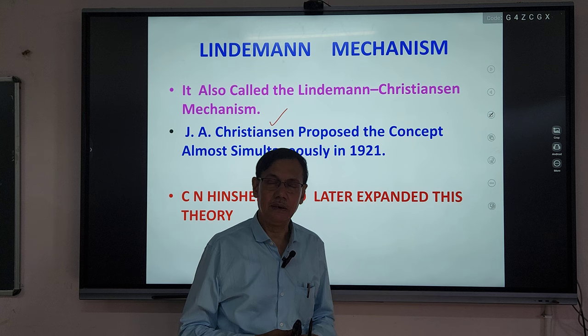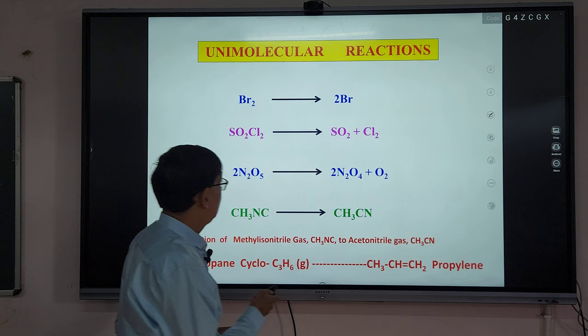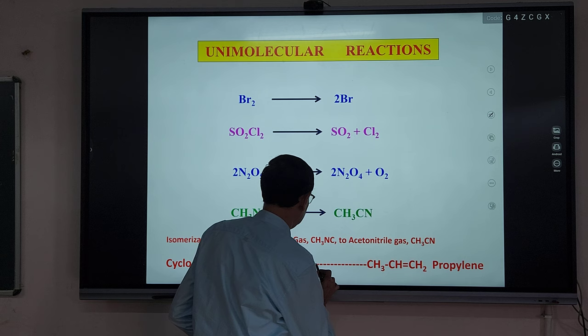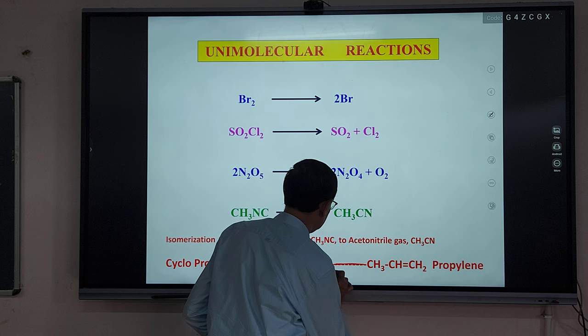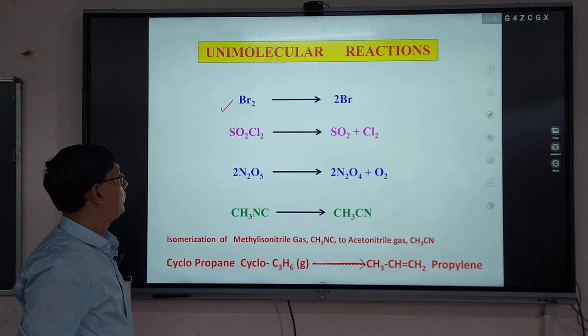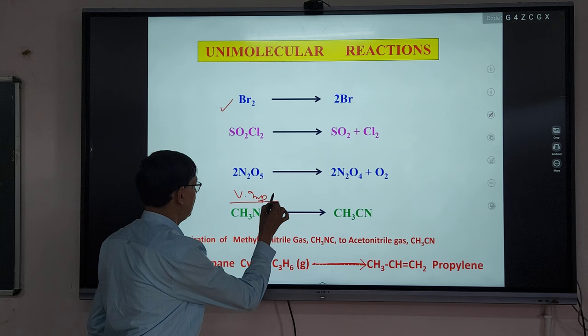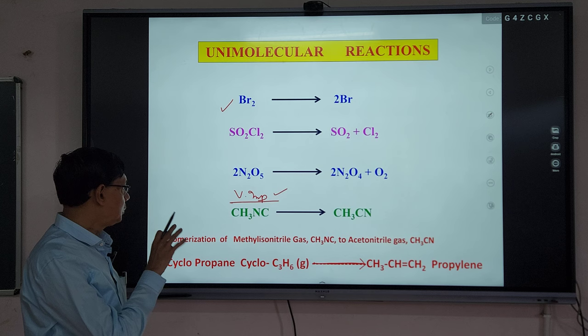Now let me give some simple examples. You must know at least five examples of first-order reactions — some examples of unimolecular reactions with their rate constants. The most simple reaction is Br₂ converting into two Br atoms. Sulfuryl fluoride converting into SO₂ and Cl₂. These are important reactions for which rate constants have been determined.